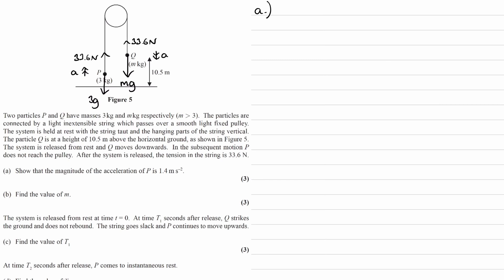If P is accelerating upwards, then there must be a resultant upwards force. So the overall upwards force would be 33.6 minus 3G. That will be equal to MA — 3 times A. We can just rearrange this equation for A. So A is equal to 33.6 minus 3G, all divided by 3, and that ends up being 1.4 meters per second squared.